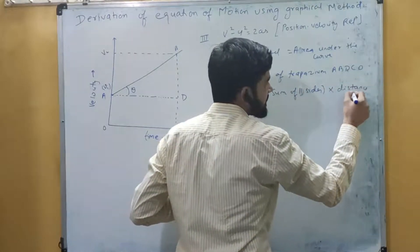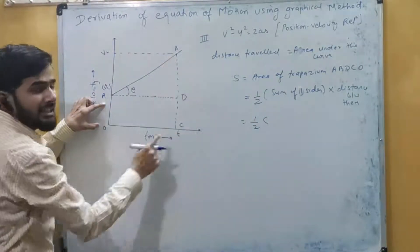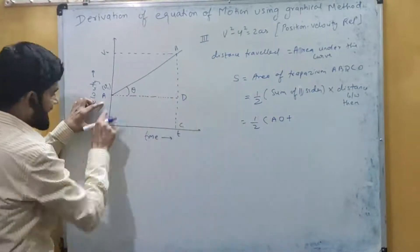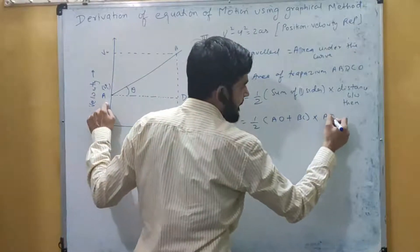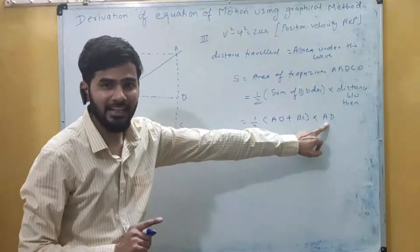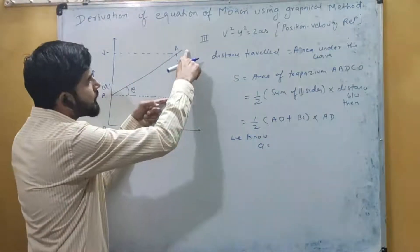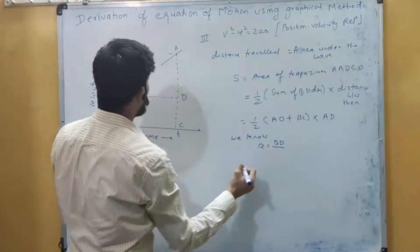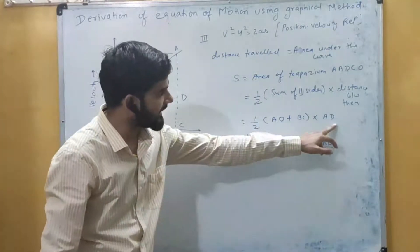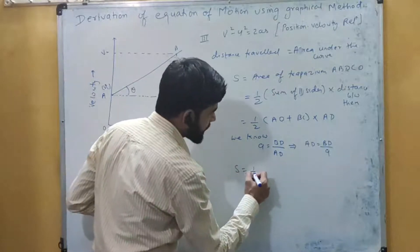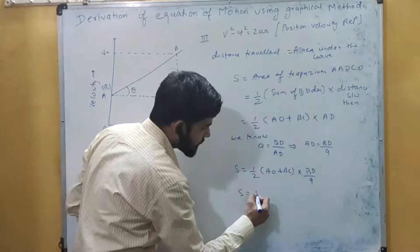The parallel sides are AO and BC, so sum of parallel sides equals AO + BC, and the distance between them is AD. We need to replace AD: since a = BD/AD, we get AD = BD/a. Substituting: s = ½ × (AO + BC) × BD/a.